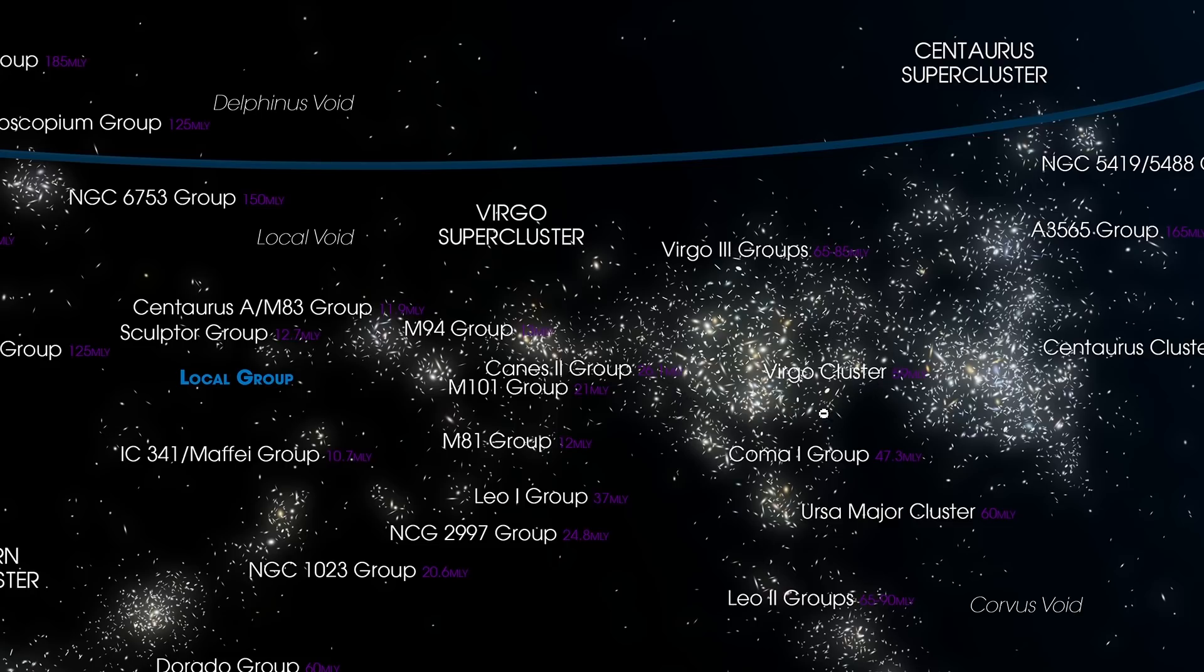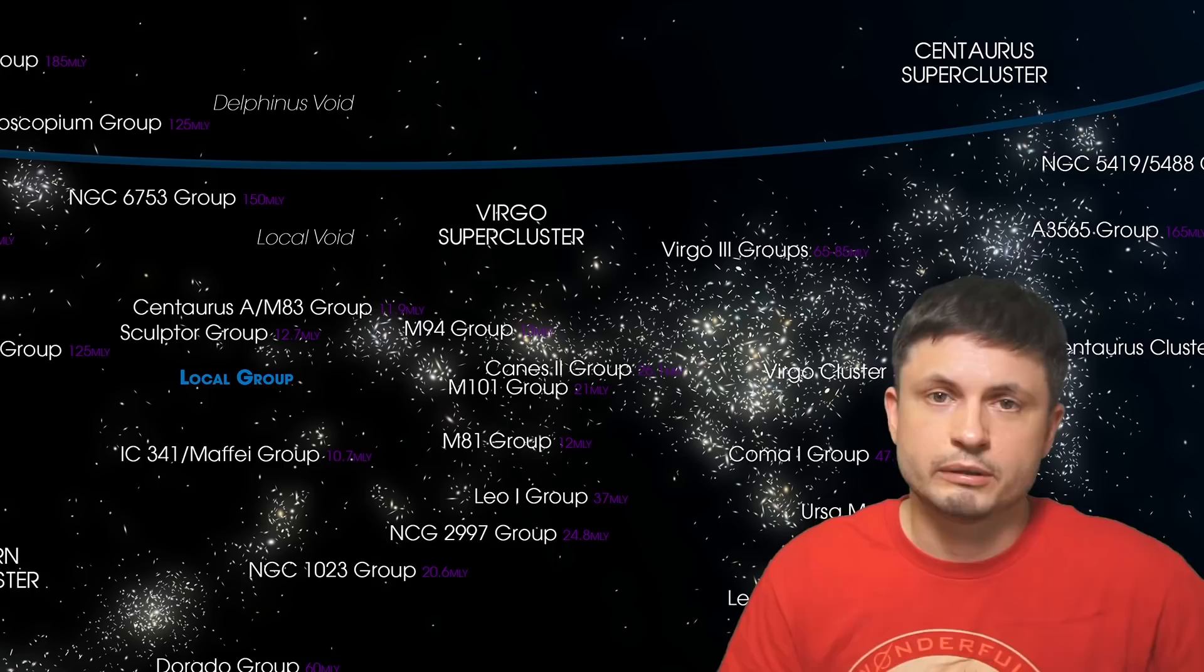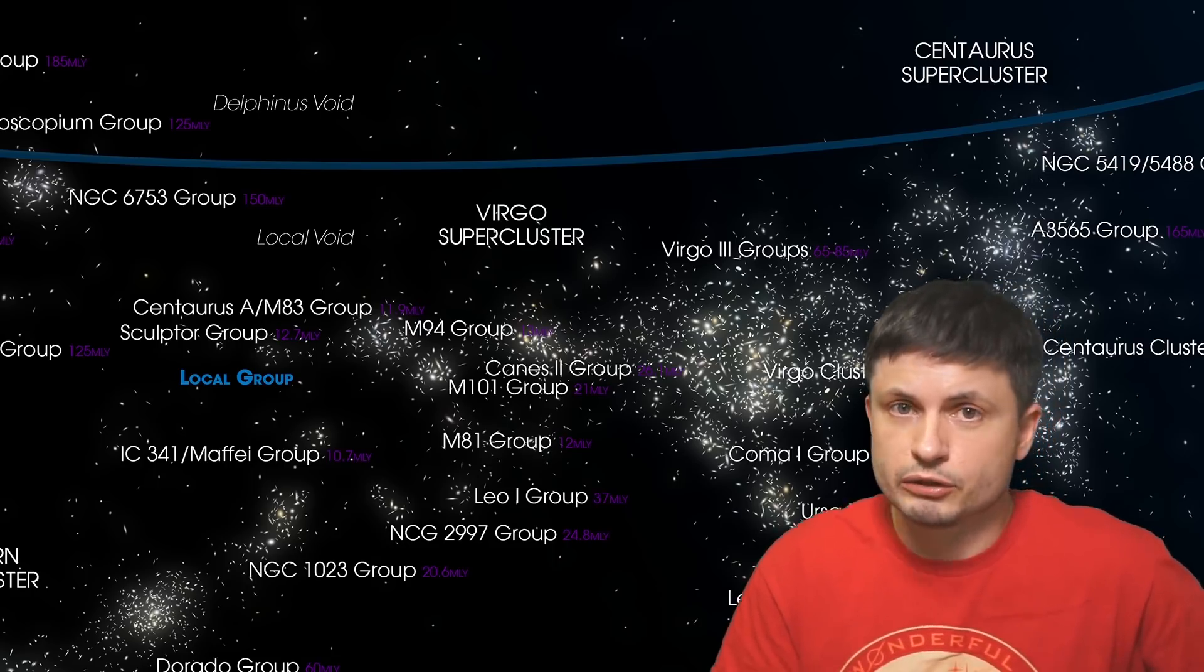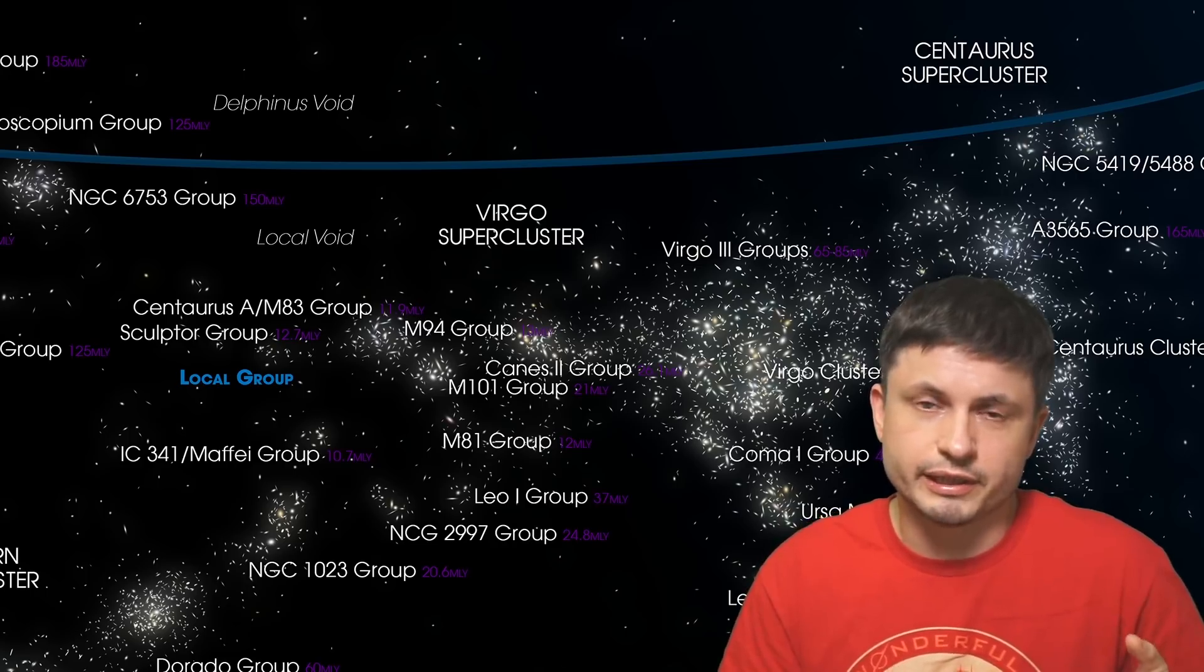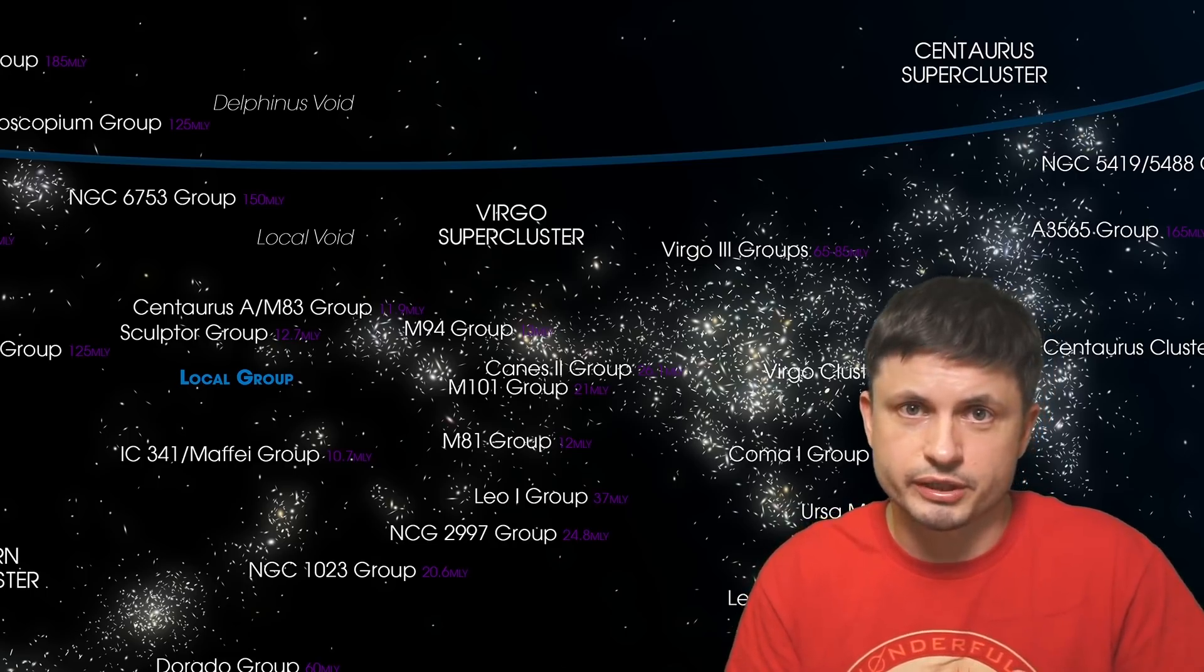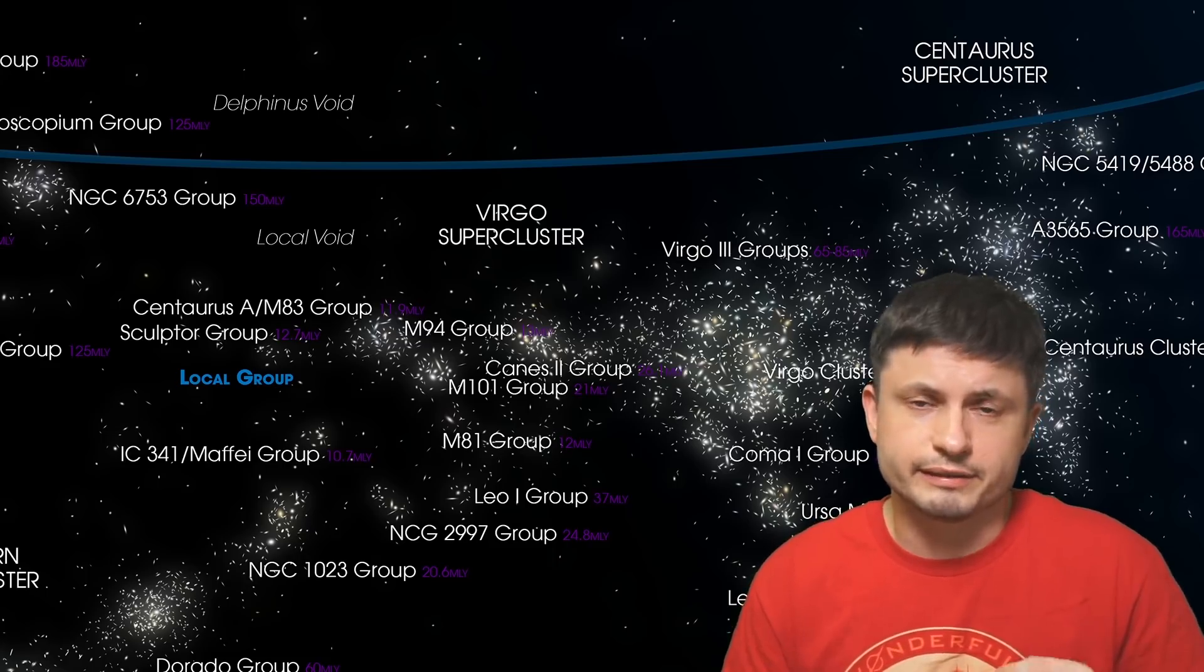And this here is this large and extremely massive component that represents just a part of the supercluster that also happens to have the name Virgo. And altogether, all of these galaxies are actually moving in a certain direction, a direction that we sometimes refer to as the Great Attractor. But we'll talk more about this in some of the future videos, so make sure to subscribe.